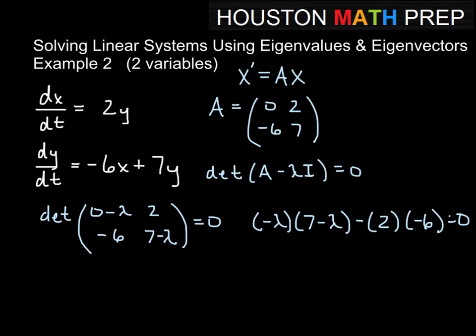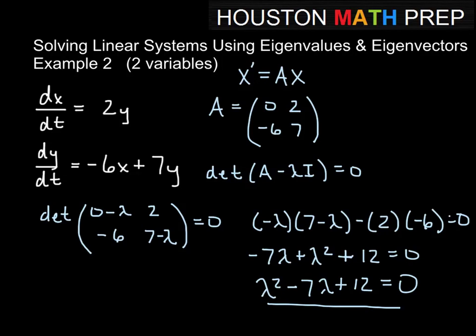Alright, so if we distribute here, we'll get -7λ plus λ² plus 12 equal to 0. Let me go ahead and rearrange this. So this would be λ² minus 7λ plus 12 equal to 0. That's our characteristic equation right there.